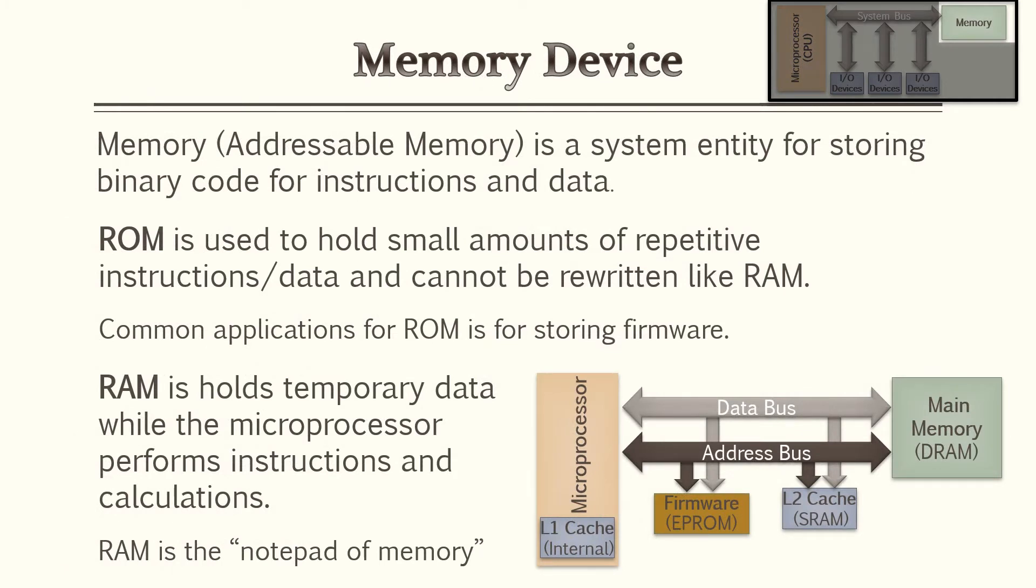Next we have memory devices. Memory or address memory is a system entity for storing binary code for instructions and data. So all those instructions the microprocessor is computing, the memory actually holds these instructions and data. ROM is used to hold small amounts of repetitive instructions or data and cannot be rewritten like RAM does. Common applications for ROM would be your firmware for your microprocessor. Your RAM holds temporary data while the microprocessor performs instructions calculations. So think of RAM as your notepad.